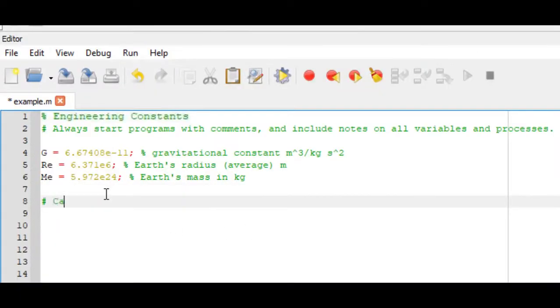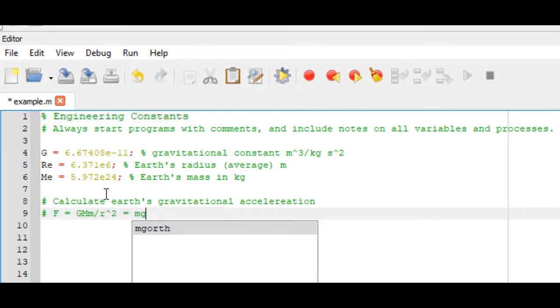Some constants you just copy out of tables. Other constants it might be nice to actually calculate and see where they're coming from. So let's say we want to calculate the Earth's gravitational acceleration. If you've taken physics you know the gravitational force between two masses is equal to G times M times M divided by R squared. Where G is the gravitational constant we just did, the two M's are the masses that the force is acting between. And then the radius that's the distance between the center of mass of the two objects. So for objects on Earth if you have F equals MG equals GM over R squared. The small M cancels out and you can get gravitational acceleration on Earth is equal to GM over R squared.